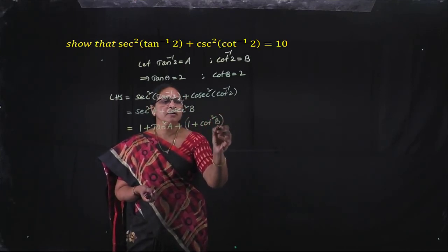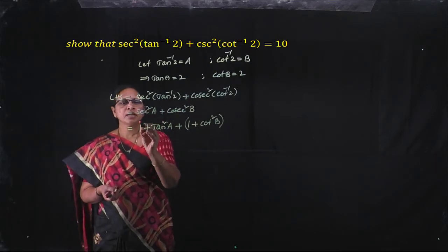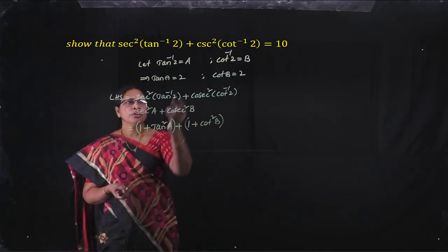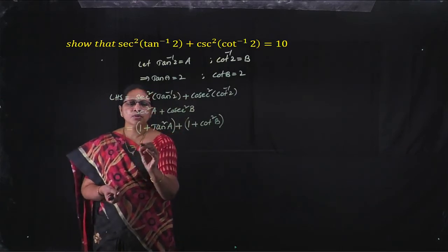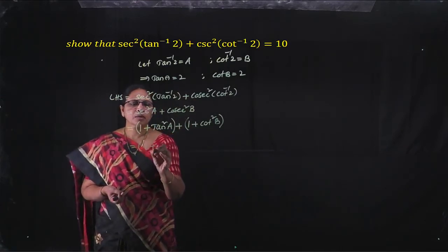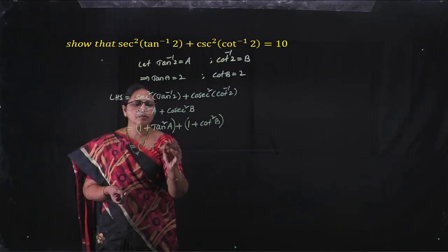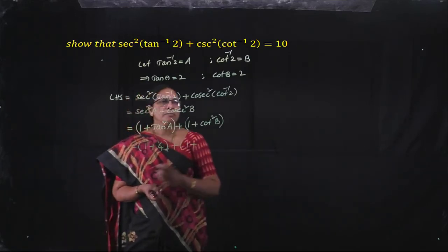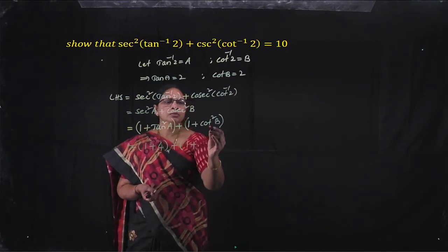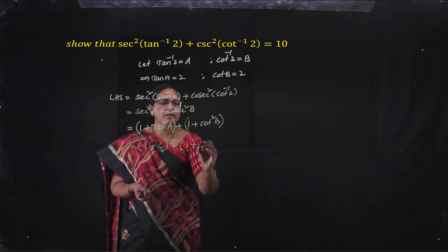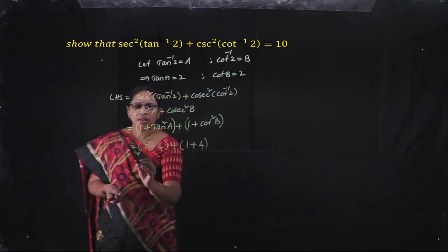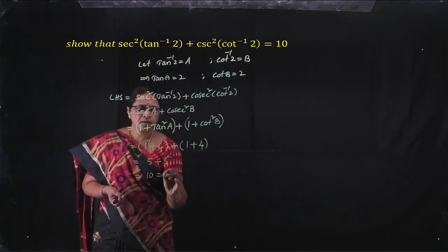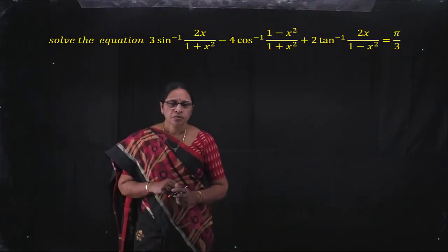Secant square a equals 1 plus tan square a equals 1 plus 4 equals 5, since tan a is 2. Cosecant square b equals 1 plus cot square b equals 1 plus 4 equals 5, since cot b is 2. Therefore LHS equals 5 plus 5 equals 10, which is the RHS.